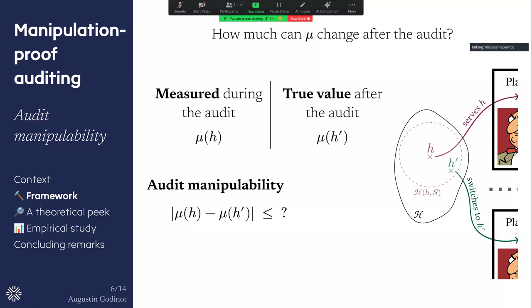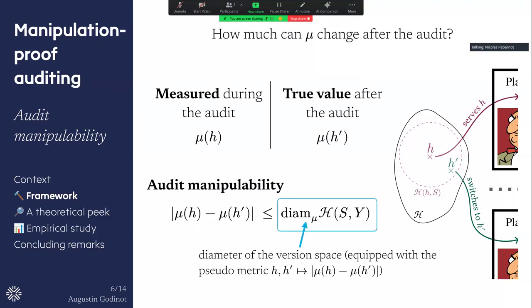And we want to bound this absolute difference. And it turns out that this is bounded by a quantity that we call the diameter of the version space. I'm not going to go too much into the details for now, but just think of it as a worst-case bound. What is the worst impact the platform could have on the fairness metric if they change their model after the audit, respecting the previous assumptions?